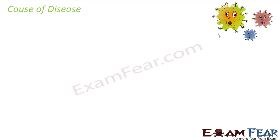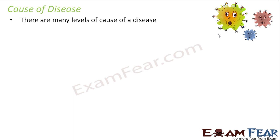Let us now try to understand what causes disease. As you can see in the pictures, germs are shown as a cause of disease. But even before we get into germs, let us talk about the levels of cause of a disease. There are many levels of cause — quite surprising — because there are multiple causes for a single disease, which is why some causes are primary and some are secondary or tertiary.